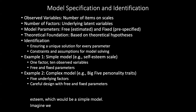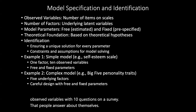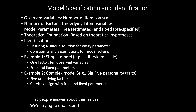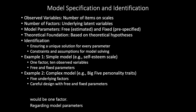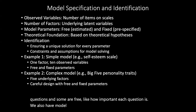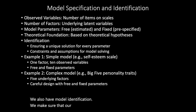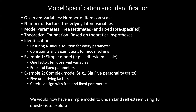Imagine we want to understand self-esteem and we build our model with observed variables — 10 questions on a survey that people answer about themselves. We're trying to understand only one hidden idea, self-esteem, so that would be one factor. Regarding model parameters, some rules are fixed, like the number of questions, and some are free, like how important each question is. We also ensure model identification — that our model can be solved and does not contradict itself. In conclusion, we would now have a simple model to understand self-esteem using 10 questions to explore one underlying feeling.